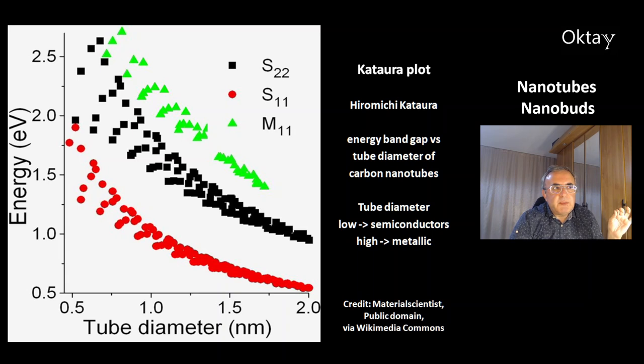This is the Kataura plot of Hiromichi Kataura. It describes the energy band gap on the y-axis versus the tube diameter of carbon nanotubes. If the tube diameter is low, the energy band gap increases and you get a semiconductor. If the tube diameter is big, you get a low energy band gap, meaning a more metallic nanotube.